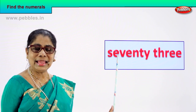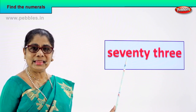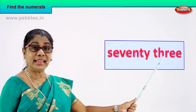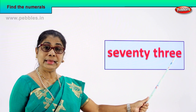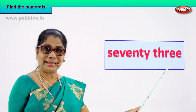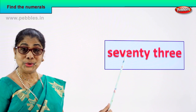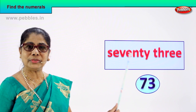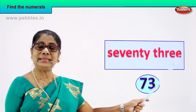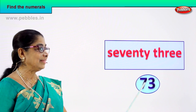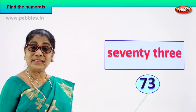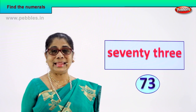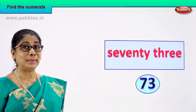Spell: S-E-V-E-N-T-Y, 70. T-H-R-E-E, 3. 73. That's the number name. Very good, you read it correctly — 73. How do we write the numeral for this number name? 73 — seven and three, 73. Good, let's take another number name.